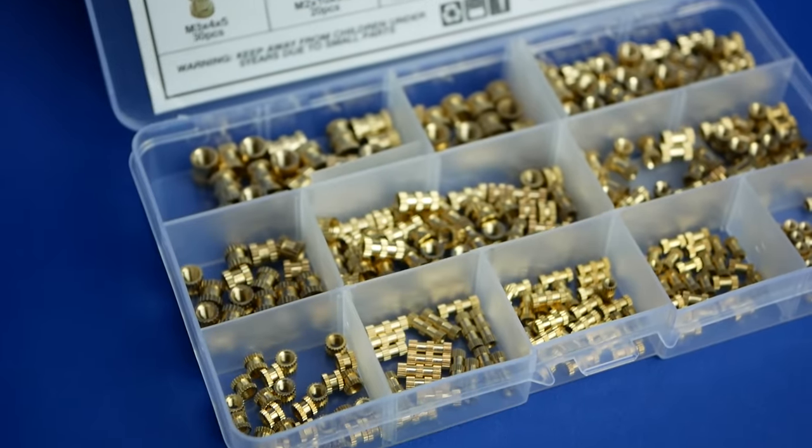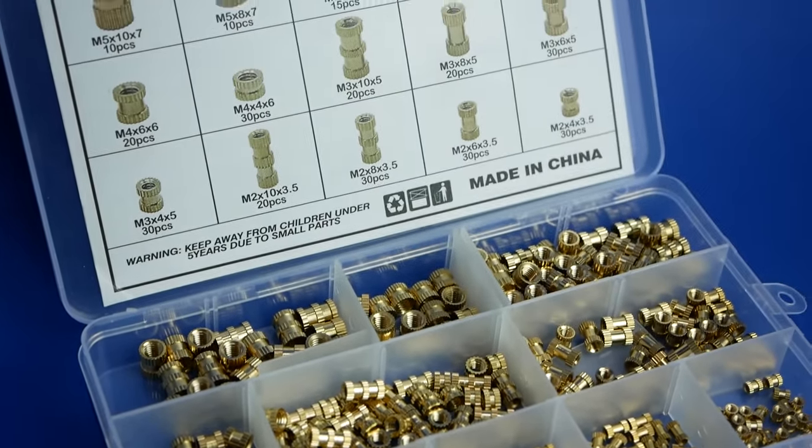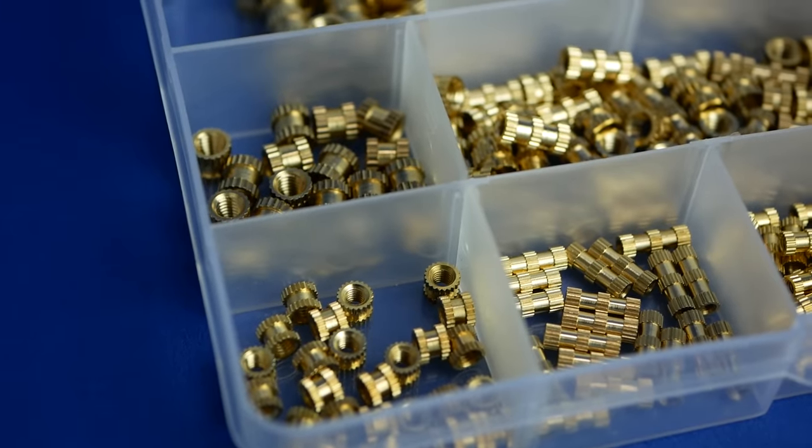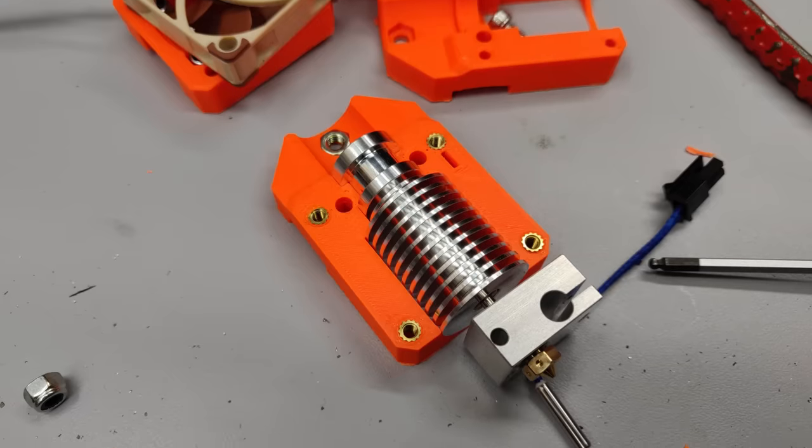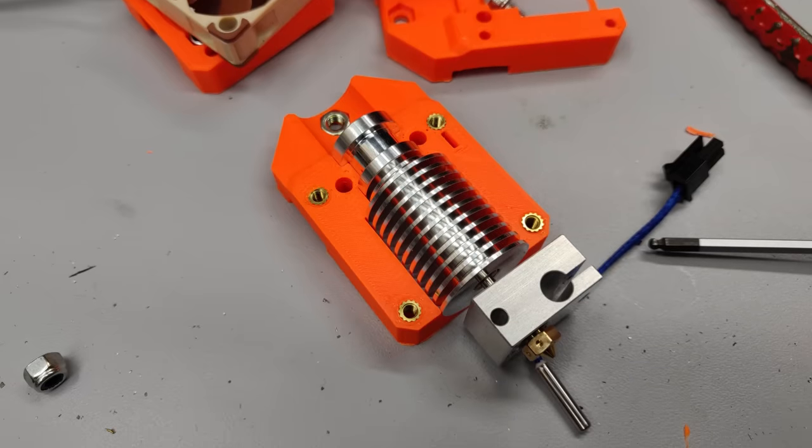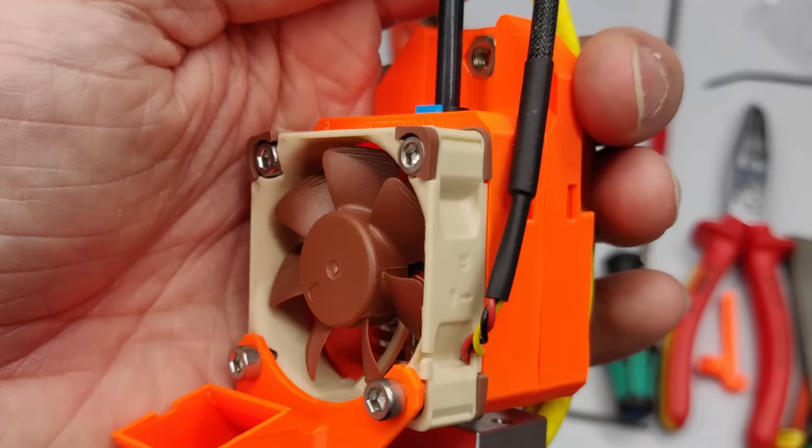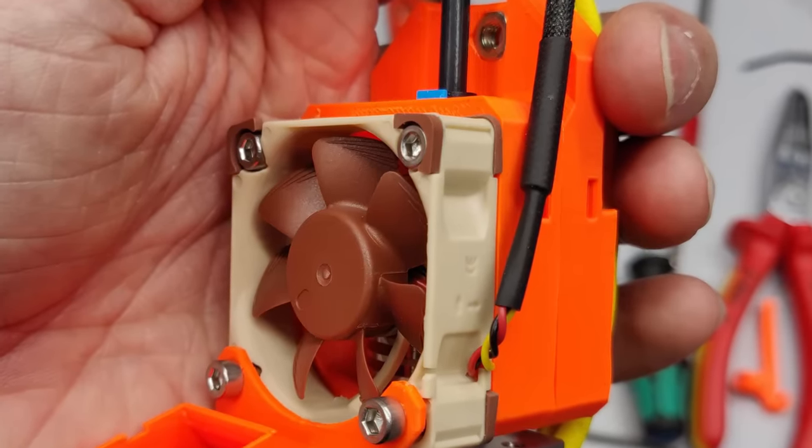Even though the cheap inserts performed equally in torque out, they were by a factor of 4 weaker than the expensive ones when it came to pull out. This sounds bad on first glance, but I still think that they are a usable alternative if your loads are not too high because 139kg on an M3 bolt is still quite something. And they still perform the task of not worrying too much if you regularly loosen and tighten that connection.